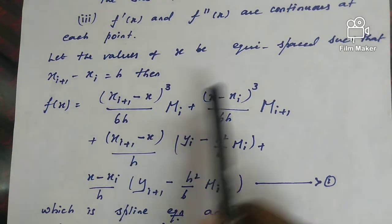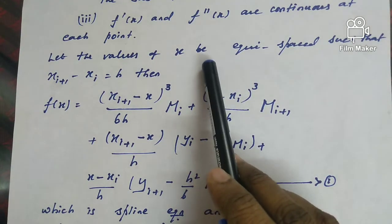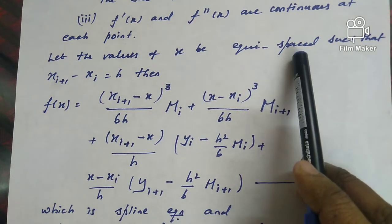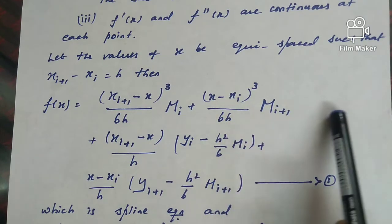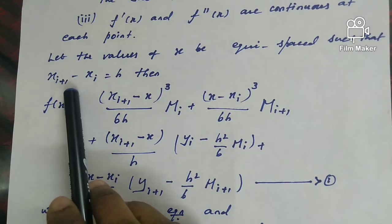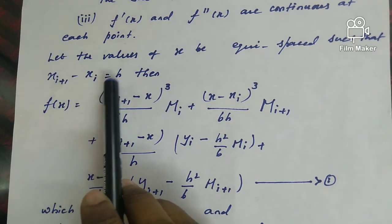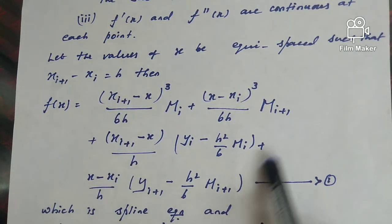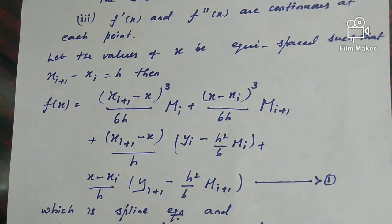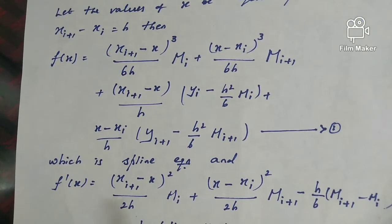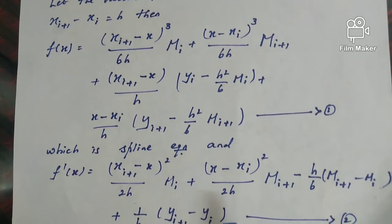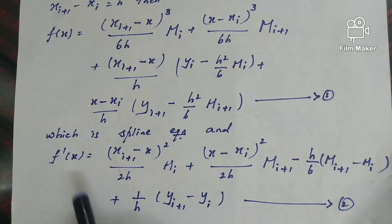In this formula, the x data is equispaced, meaning the difference between consecutive x values is equal — that is why x_{i+1} minus x_i equals h. Equation 1 is the spline equation. For f'(x), there is a corresponding formula involving (x_{i+1} - x)² / 2h and similar terms. Equation 2 gives the formula for f'(x).